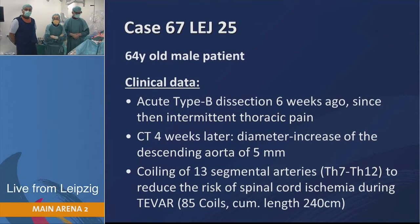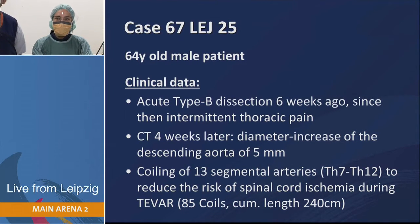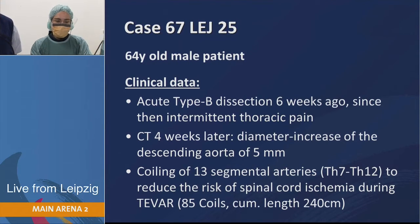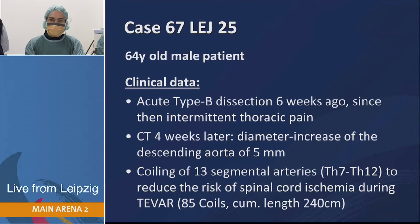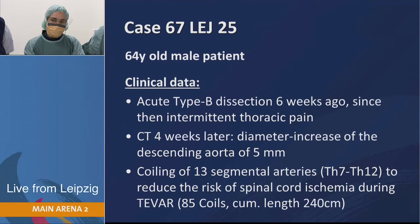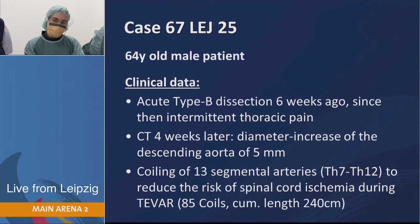So we have here on the table a 64-year-old male patient. This patient was admitted approximately six weeks ago with an acute asymptomatic type B aortic dissection. Since then, the patient had intermittent thoracic pain. We performed a follow-up CT approximately four weeks later and noticed an increase of the aortic diameter of approximately five millimeters. At this point, we decided to treat the patient endovascularly. Because of the length of the treated aorta, we planned to treat the complete thoracic aorta.